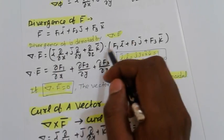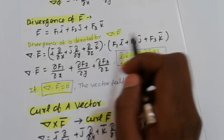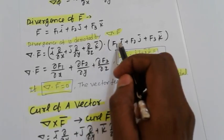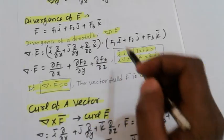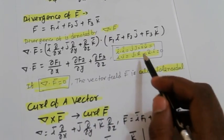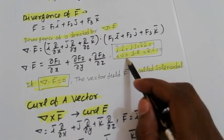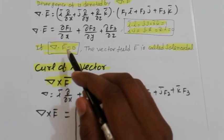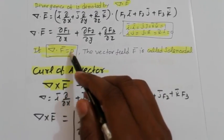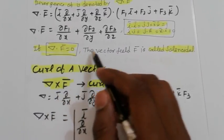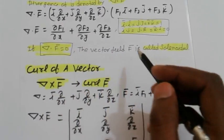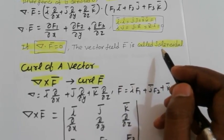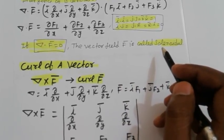Cross terms like i·j, j·k, k·i are all zero. If nabla dot F equals zero, then the vector field F is called solenoidal.